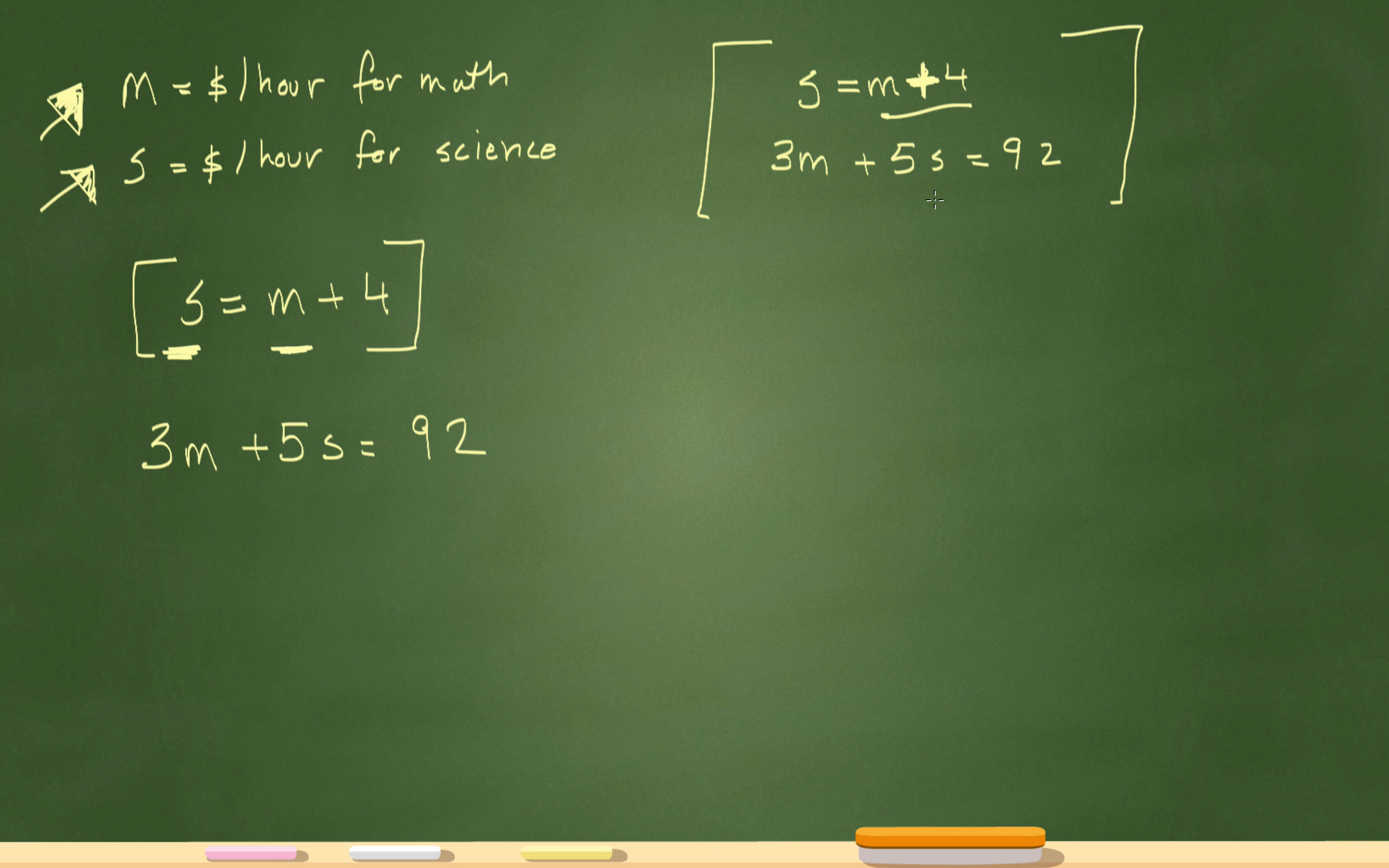So instead of that S, I'll replace that with M plus 4. So let's check this out. It'll be 3M plus 5 times M plus 4 equals 92, because what I've done is I've replaced the S with the M plus 4. Now let's solve for M. Remember, M is the dollars per hour for math, and that's what the question is asking.